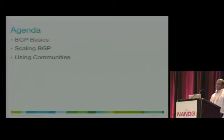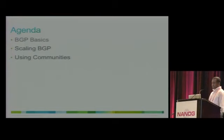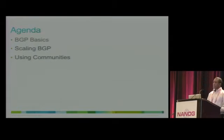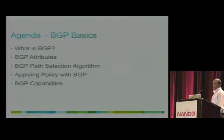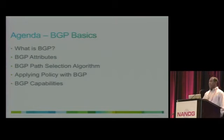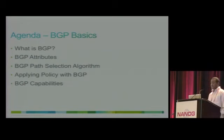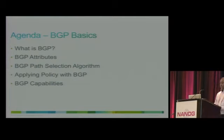In this first session, VGT 101, we'll discuss VGT basics, then scaling techniques and how comments are used in VGT. In the second section, we'll focus on how VGT is used in ISPs, and we'll also discuss some VGT security-related features. On the VGT basics, we'll cover what VGT is, VGT attributes, the path selection algorithm, how policies are applied using VGT attributes, and VGT capabilities.